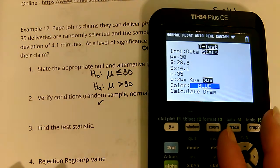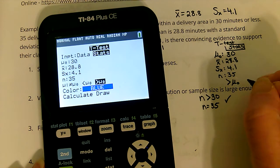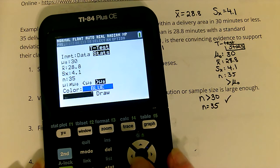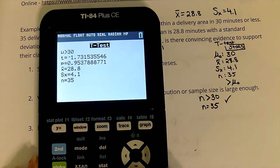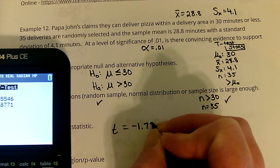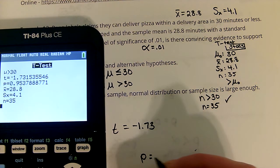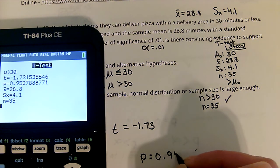Now the alternative here was greater than, so greater than is what we're going to choose, and we're going to go down and calculate. I get a t-value of negative 1.73 and a p-value of 0.9538.